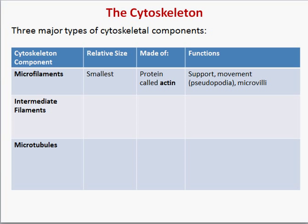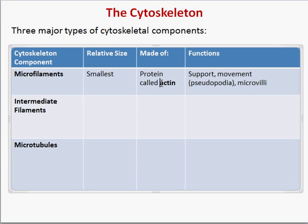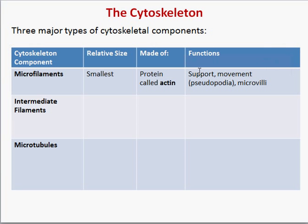Microfilaments are the smallest of the cytoskeleton components. They're made out of a protein called actin and are related to support and movement. The example we learned about are pseudopodia — the movement of the plasma membrane where the cell contracts and pulls itself forward. Pseudopodia means false foot. Also, microvilli, these small extensions from some cells, are extensions of the cytoplasm supported by microfilaments.